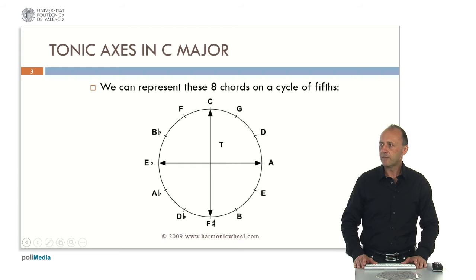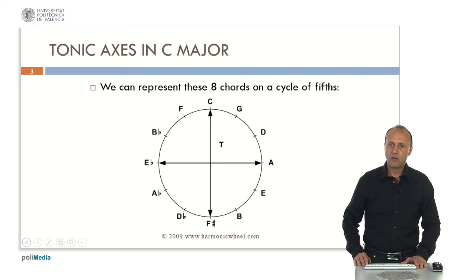We can represent these eight chords as we can see here. We observe two axes: the primary axis with chords C major and minor and F-sharp major and minor, and the secondary axis with chords A major and minor and chords E-flat major and minor.